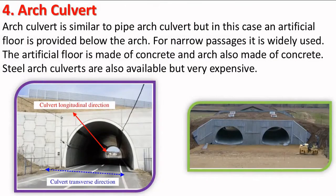Next is arch culverts. An arch culvert is similar to a pipe arch culvert, but in this case an artificial floor is provided below the arch. For narrow passages, it is widely used. The artificial floor is made of concrete and the arch is also made of concrete. Steel arch culverts are also available but are very expensive.